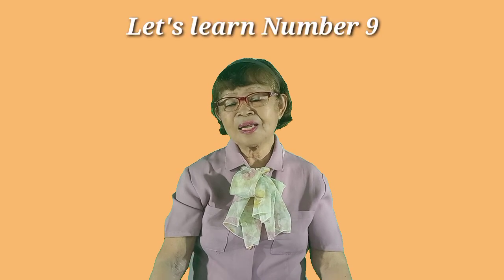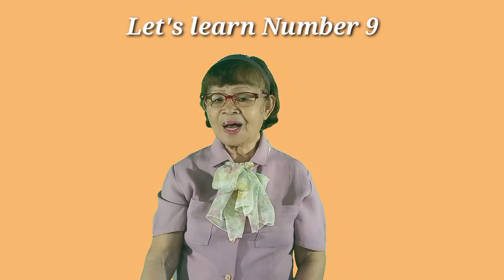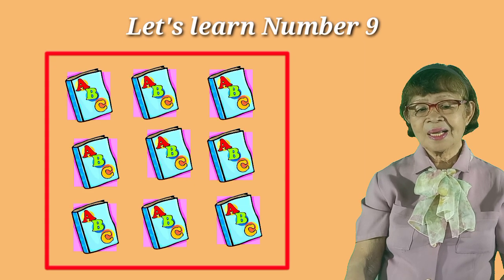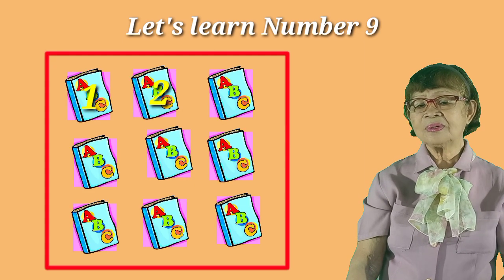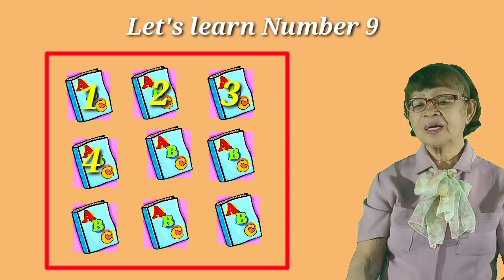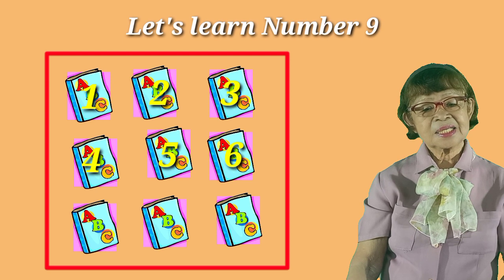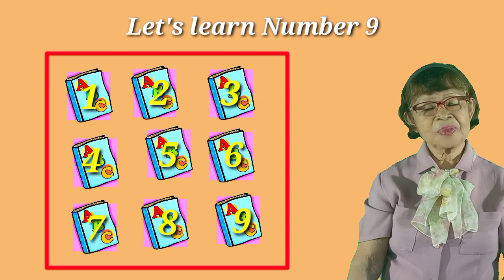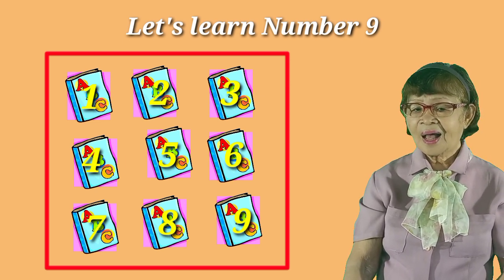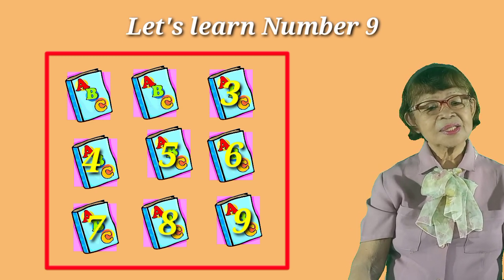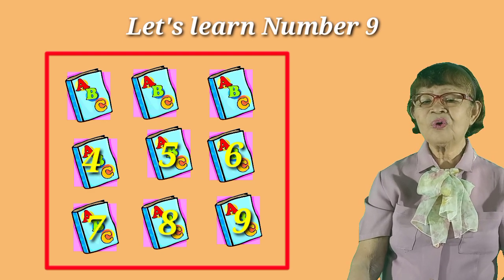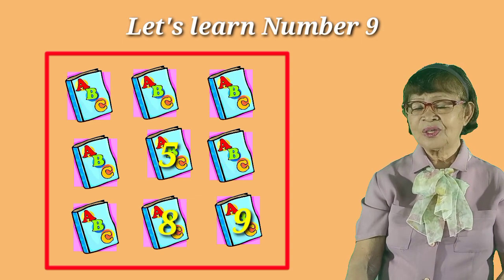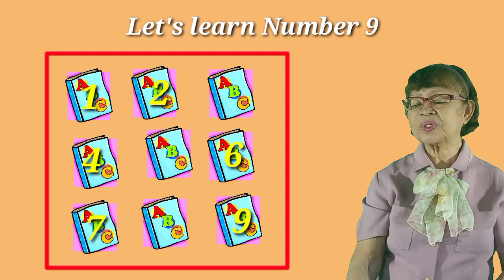Now class, let's go and learn our number 9. We're going to count the ABC books on the square. Let's count them: 1, 2, 3, 4, 5, 6, 7, 8, 9. We have 9 books on the square. How many books do we have? Let's count again: 1, 2, 3, 4, 5, 6, 7, 8, and 9. Surely we have 9 books on the square.